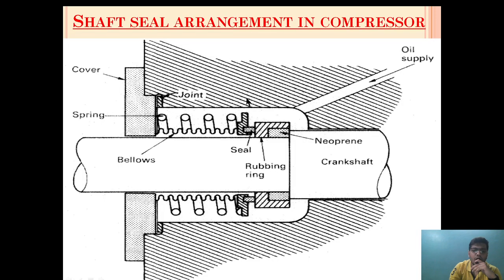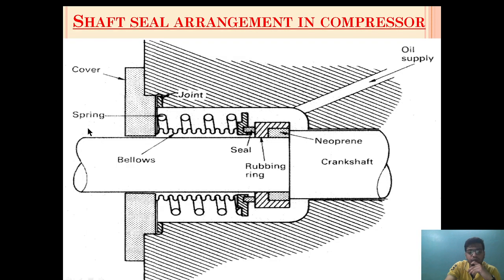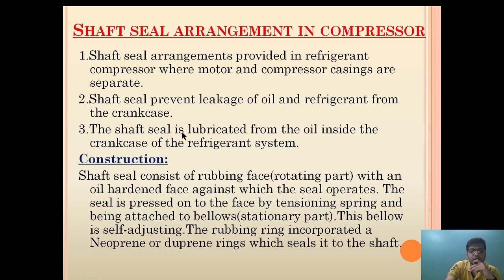The soft seal prevents the leakage of oil and refrigerant from the crankcase. As you know, the refrigerant operates in a closed cycle, so any leakage outside the system will cause loss of refrigerant and will also reduce the effect of refrigeration. To ensure there is no loss in the cycle, we provide an enclosed soft seal arrangement which will prevent the leakage.